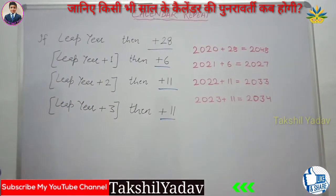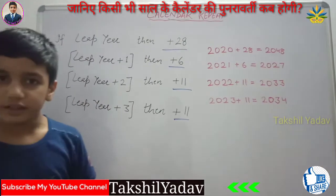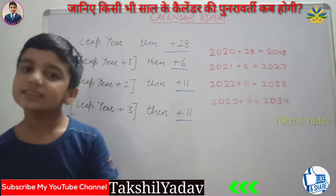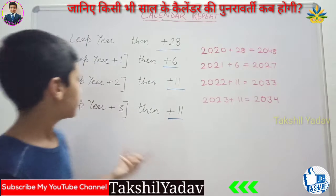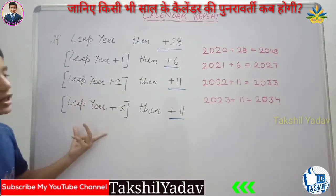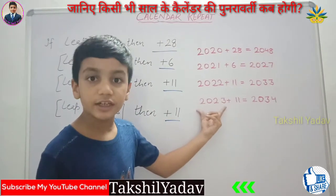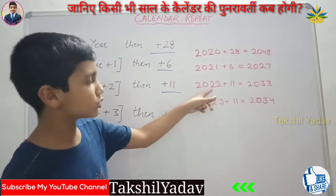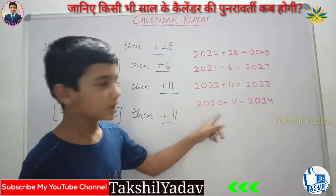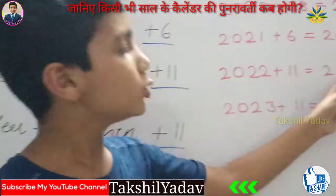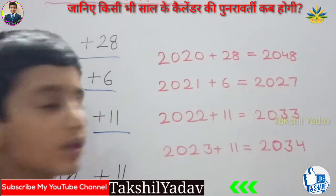For leap year plus 2 and leap year plus 3, we add 11 to the year and the resulting year's calendar will match. For example, 2022 (2020 plus 2) and 2023 (2020 plus 3): add 11 to get 2033 and 2034 respectively. Both 2033 and 2034 match the calendars of 2022 and 2023 respectively.